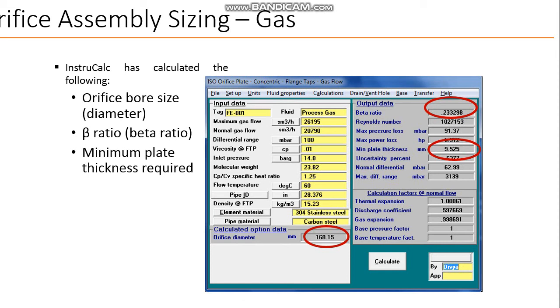I have filled in all the data. Minimum gas flow 26195, normal gas flow 2790, differential range is 100. All these input data have been fed into InstruCalc. Inlet pressure 14.8, molecular weight 23.80, CP by CV is 1.25, flow temperature is 60.